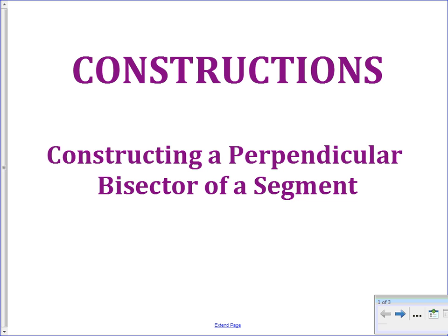A perpendicular bisector is a segment that is perpendicular to the given segment, which means it intersects at a 90-degree angle, and it is a bisector. What bisect means is to cut in half. So we are going to create segments that are perpendicular to our given segments, and they are going to cut them in half.